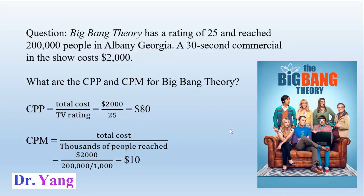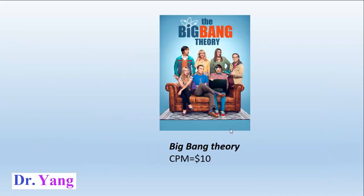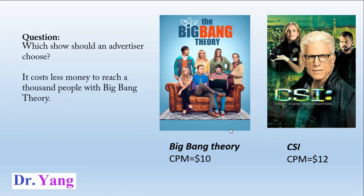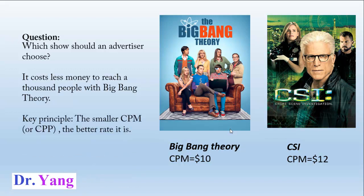Now that we understand how to calculate CPP and CPM, how can we use these terms to select different kinds of rates? We have Big Bang series with a CPM of $10. What about another show — let's say CSI — with a CPM of $12. Which one should we choose for our advertising? As an advertiser, you want to spend less money to reach more people. For Big Bang series, to reach a thousand people you spend $10, but for CSI you spend $12 — which is $2 more. So the Big Bang series is the better choice. The principle is: the smaller the CPM or CPP, the better the rate.